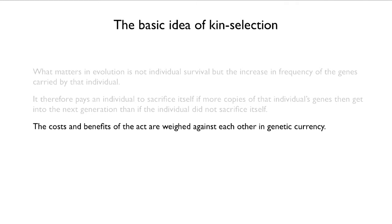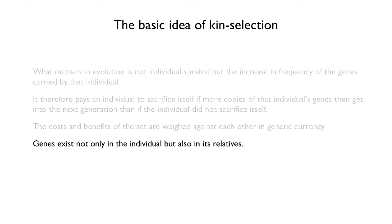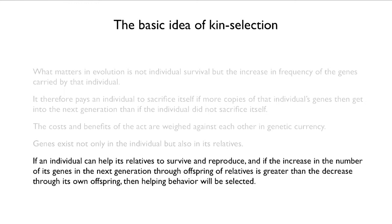The costs and benefits of an act are weighed in genetic currency — how many more copies did it get me, or how many copies did I lose? Genes exist not only in our bodies, but in the bodies of our relatives. If an individual can help its relatives survive and reproduce, and if the increase in its genes through relatives' offspring is greater than the decrease in its own offspring, then that helping behavior will be selected.